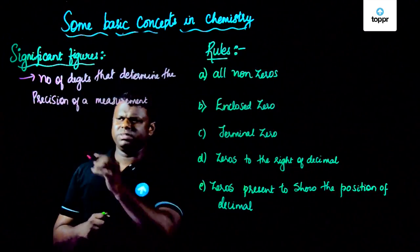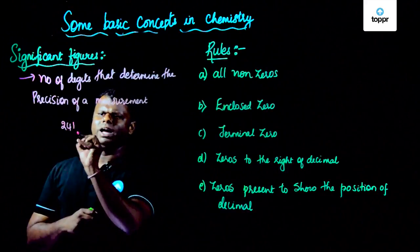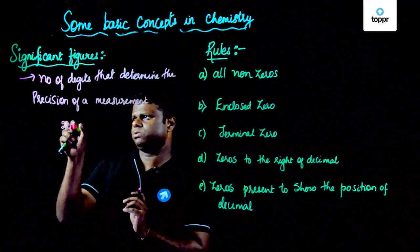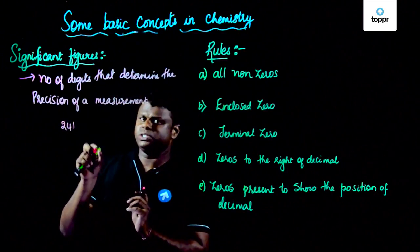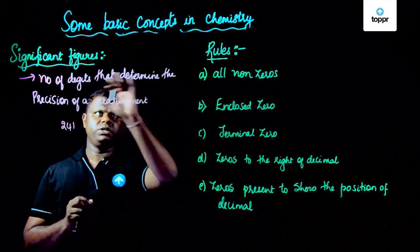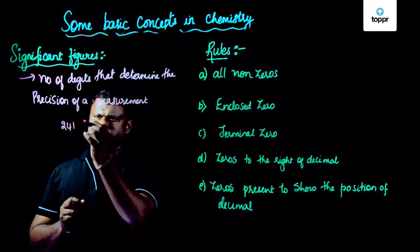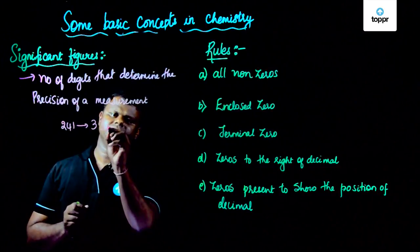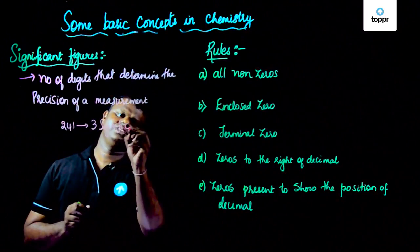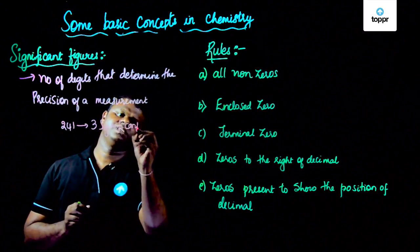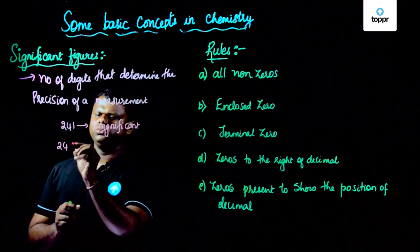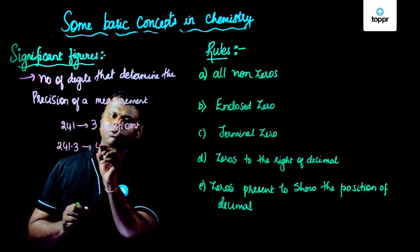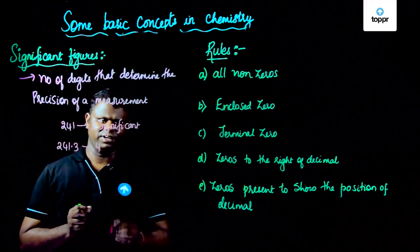So let's say if I have something like 2, 4, 1 — that means it has three digits, three numbers which determine the precision. So that means it has three significant figures. And if I have something like 241.3, this has four significant figures.